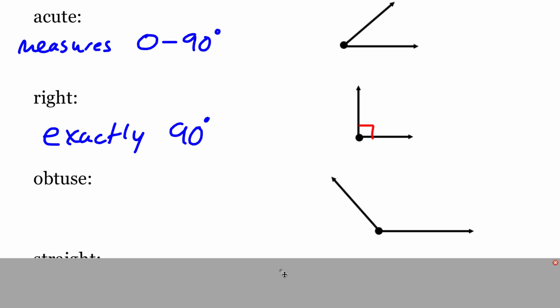Now once we start to get a little bit bigger, we've got an obtuse angle. So this is an angle that's somewhere between 90 and 180 degrees. So this is a little bit of a bigger angle.